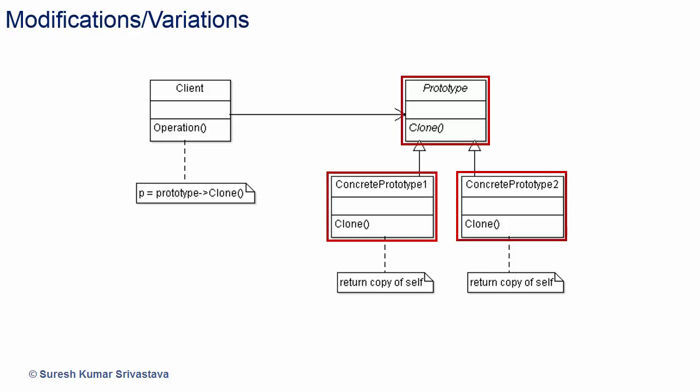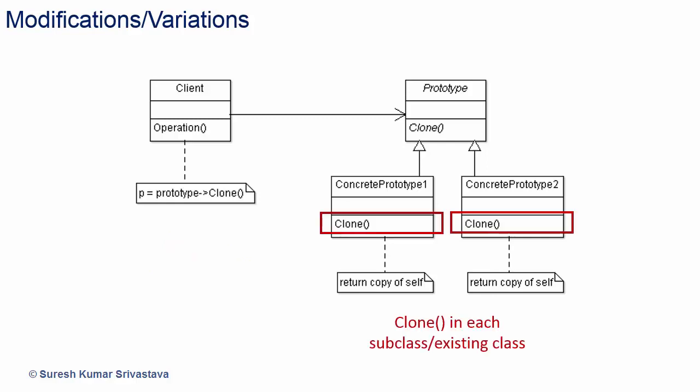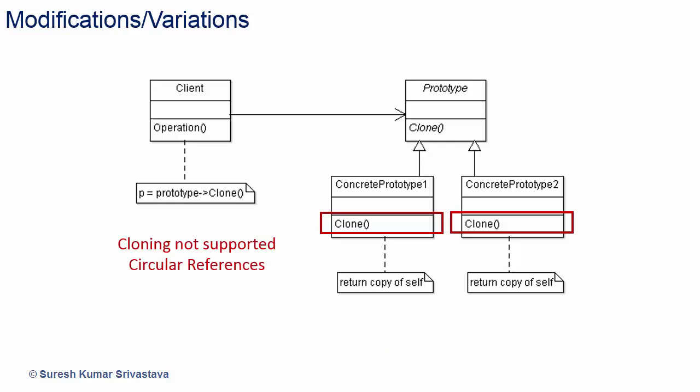Parallel subclass hierarchies will be replaced with composition and delegation, reducing the number of classes and complexity. We can create objects at runtime since objects are created using the clone method — a subclass object can be passed using the base class, and each subclass copies the object in its clone method. However, there is a cost to implementing the clone method in each subclass of prototype, and it can be difficult to add a clone method to some already-existing classes. There may also be problems cloning objects that do not support copying or that have circular references.